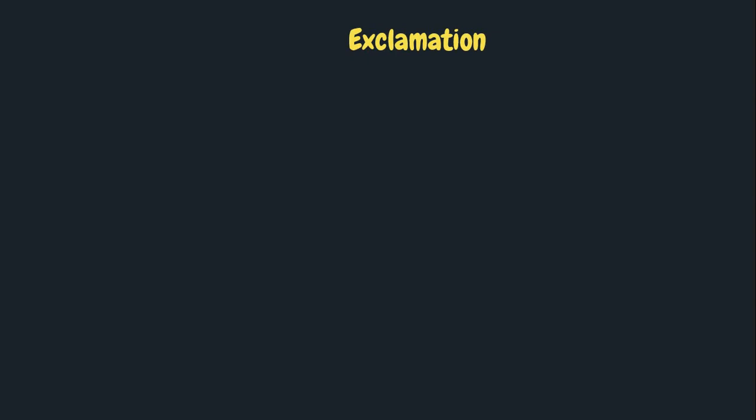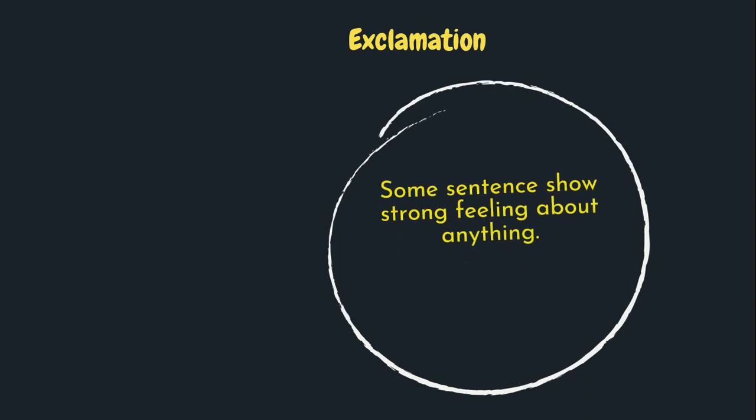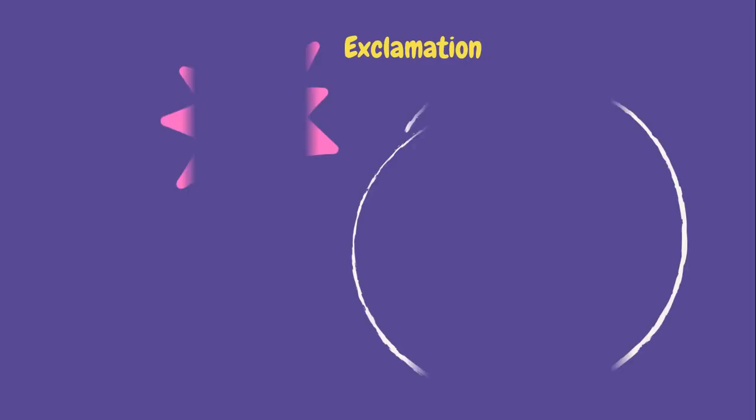Now, exclamation. Exclamation is a sentence that shows strong feeling about anything. It has emotional feeling inside. If you say this exclamation sentence, you don't need the exclamation point, but the way you're saying it, how you express the feeling, it will show that exclamation.